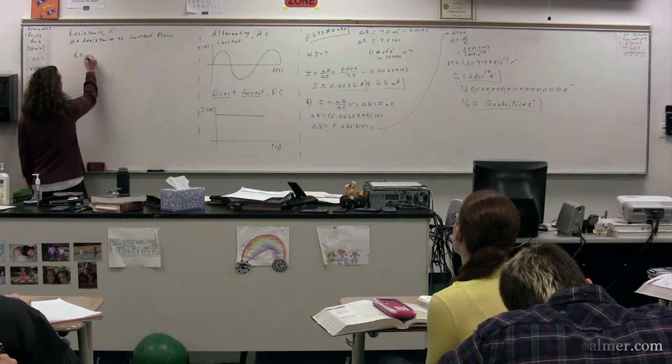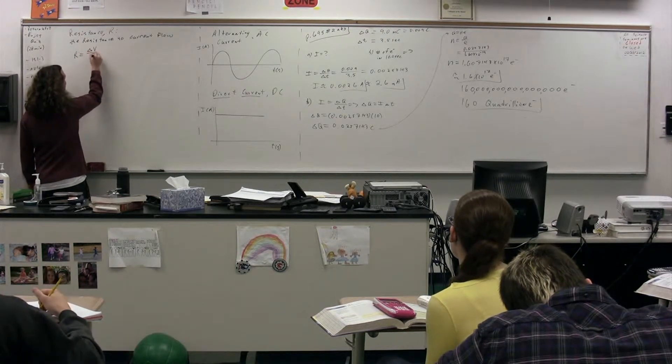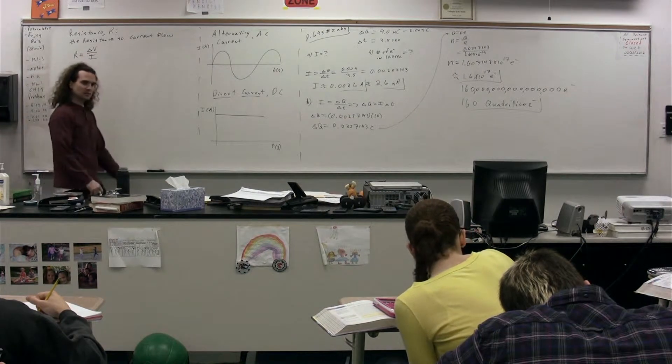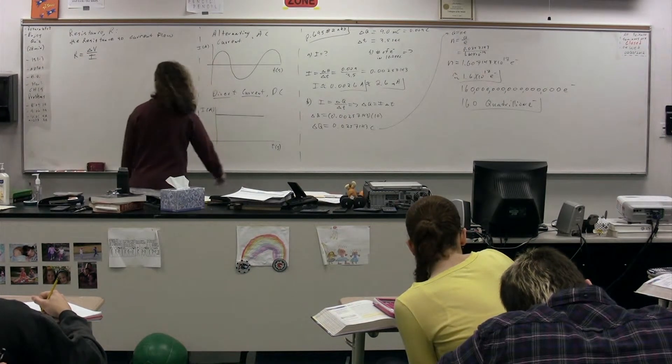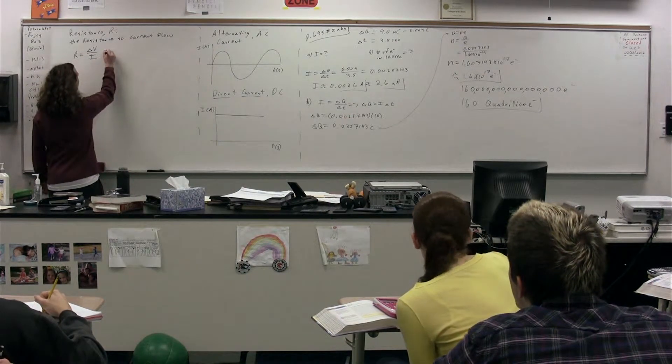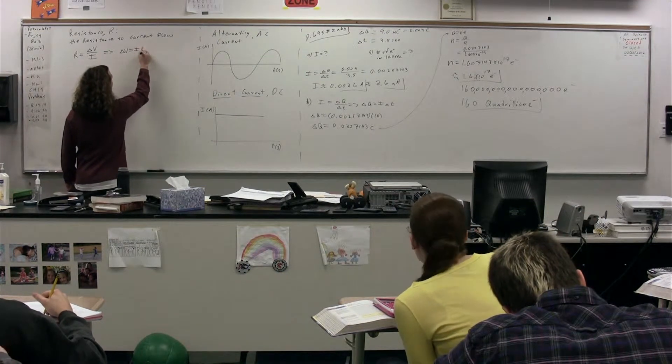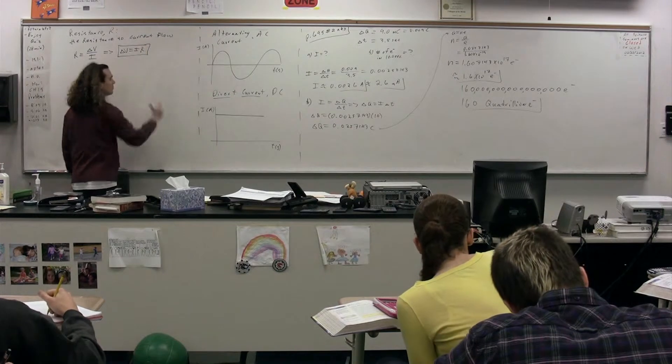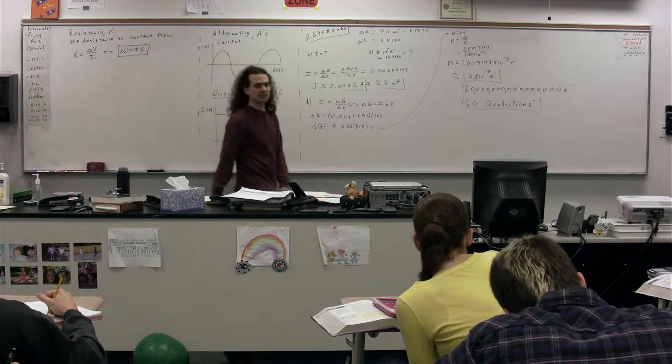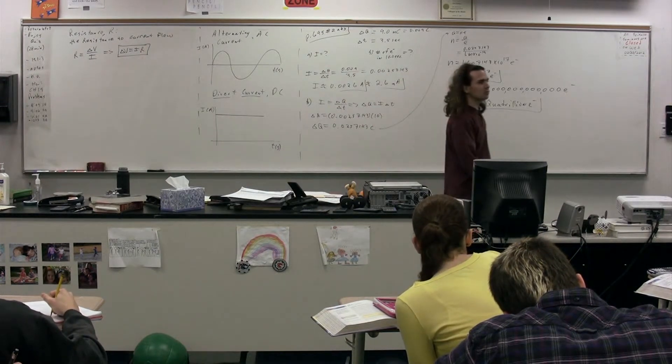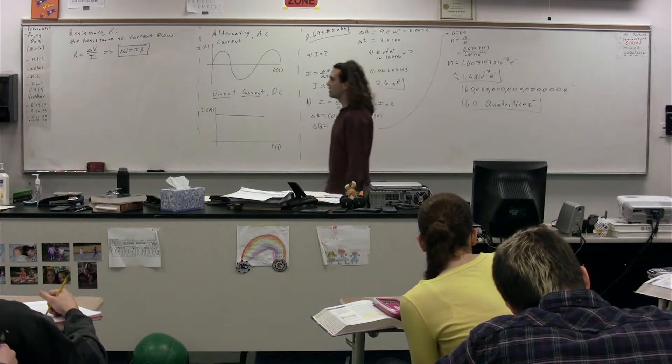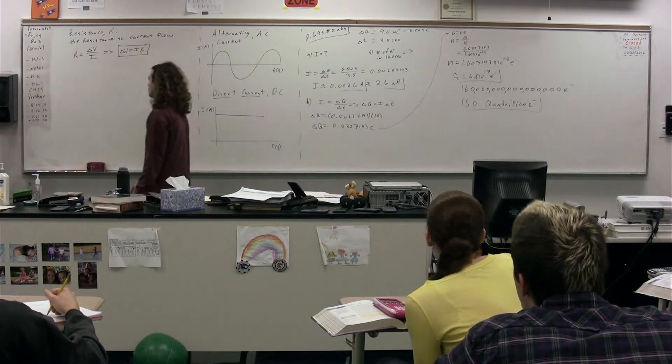Resistance by definition is equal to the electric potential difference per current. This isn't the way we normally see the equation written, so I'm going to write it the way we normally see it written, which is the electric potential difference equals the current times the resistance, and that's what's going to be boxed. But I'm defining resistance, so we really should have resistance equals whatever it's equal to, which is the electric potential difference per the current.